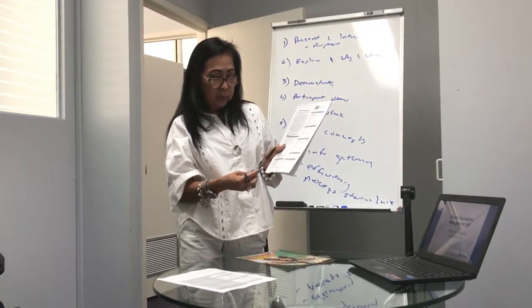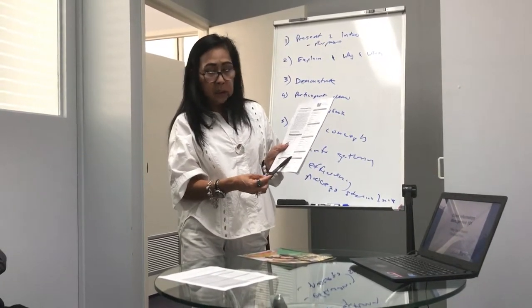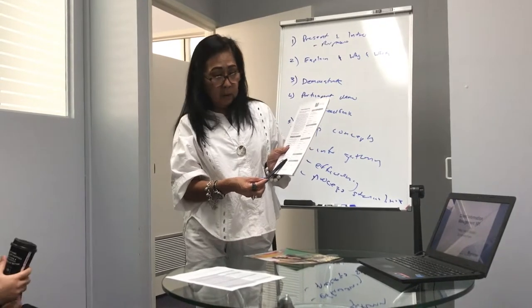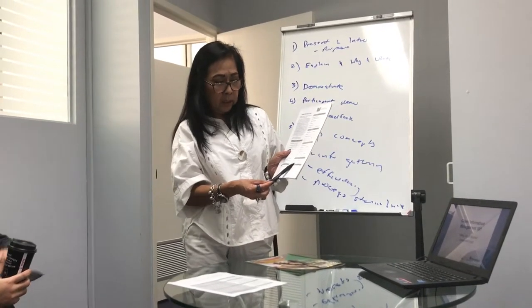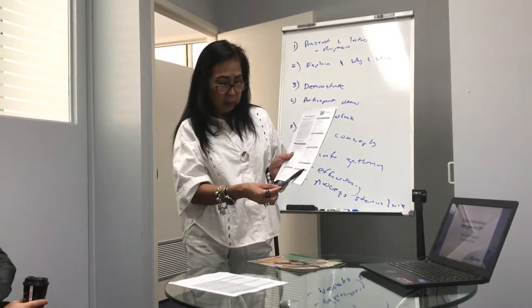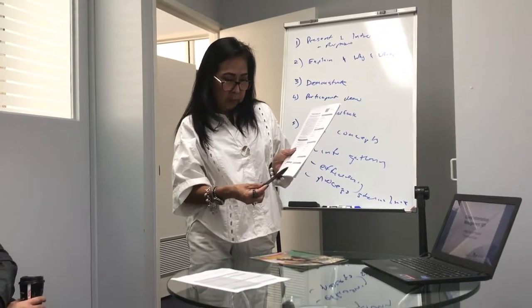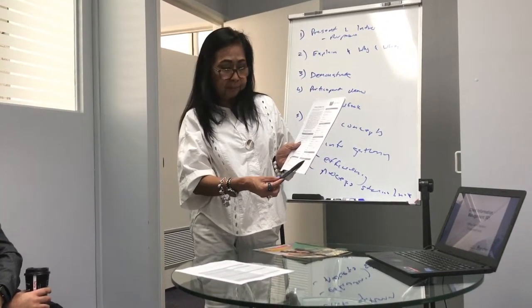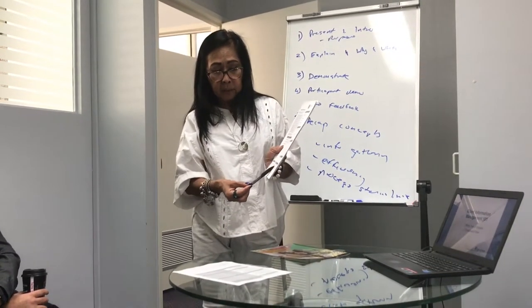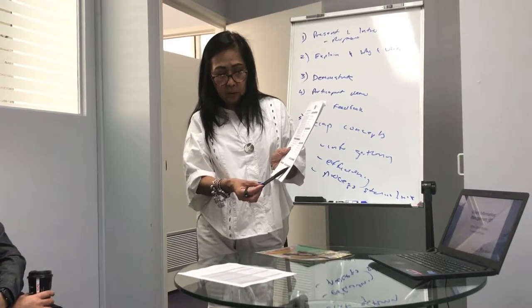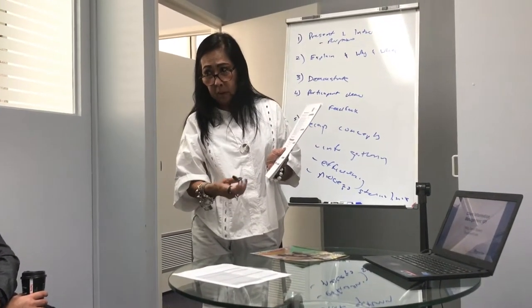We also need the student contact — their phone number and email address. Number seven is emergency contact, which is very important for students that are underage. We need the name of their guardian and the phone number.